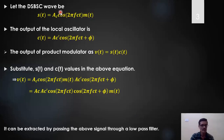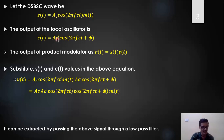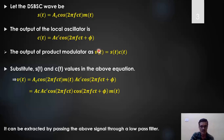The double sideband suppressed carrier signal is one input to the product modulator. In the time domain, a simple multiplication of m(t) with Ac·cos(2πfc·t) gives the DSBSC signal s(t). The other input is c(t). I have taken Ac' as the notation for the receiver carrier amplitude — it is not necessary that the amplitude of the locally generated carrier equals the transmitter carrier amplitude, but the frequency should be the same.